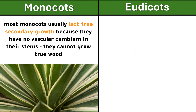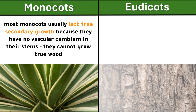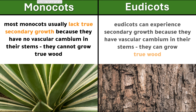Most monocots usually lack true secondary growth because they have no vascular cambium in their stems and cannot grow true wood. Eudicots can experience secondary growth because they have vascular cambium in their stems and can grow true wood.